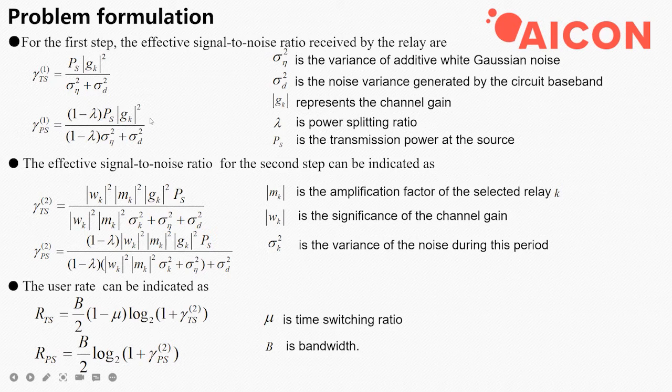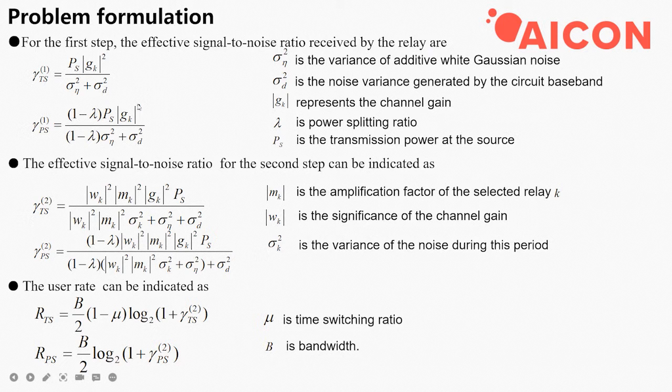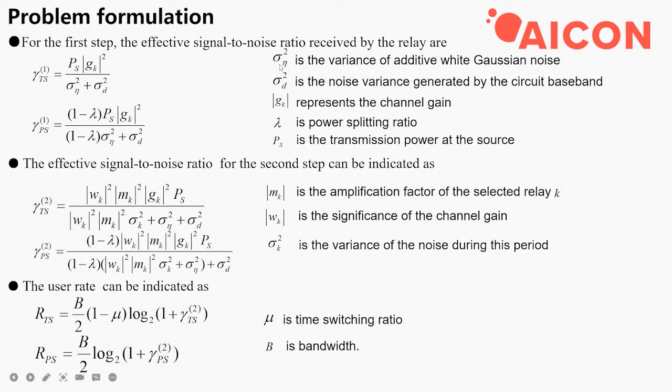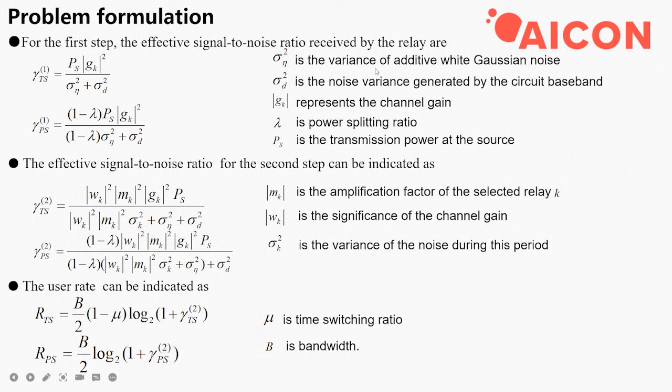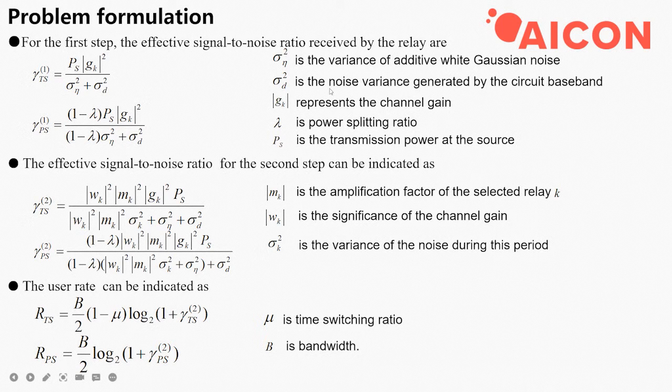Here is the problem formulation. For the first step, the effective SNR received by the relay are this and this. Sigma_eta squared is the AWGN. Sigma_D squared is the circuit baseband noise.